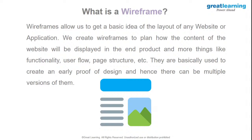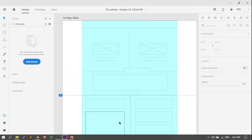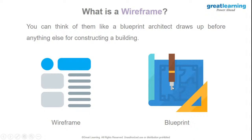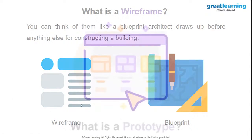Wireframing allows us to get the basic idea of the layout of any website application. We create wireframes to plan how the content of the website will be displayed — to lay out the whole design. It's like a blueprint. If you want to compare a wireframe to anything, a blueprint is a good analogy: like building a house, you need to plan and do the designing first. You have different kinds of wireframes: low fidelity, high fidelity, and extreme fidelity — that's when it goes into the territory of being a prototype.